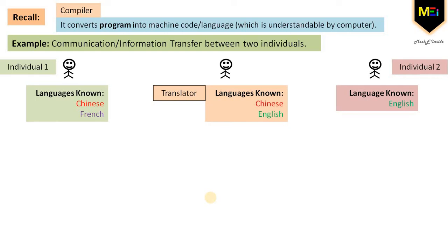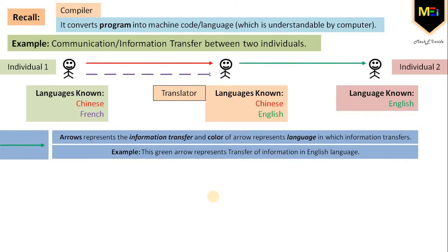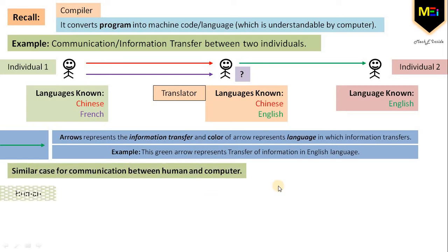That means the translator has an understanding of Chinese and English vocabulary and the correct grammatical structure of the language, so as to translate Chinese to English. But if the first individual starts giving information in French, that is not understandable by the translator, so there is a disruption in passing that information. Similar is the case in our scenario.